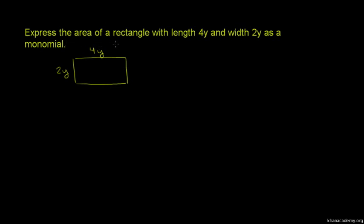If you have 4y and 2y, you can use a monomial. This is the 4y and we use the area to make the shape of the point. This is the length of the point, where the length is 4y and the point is 2y.